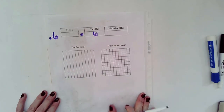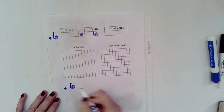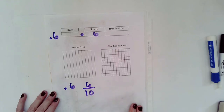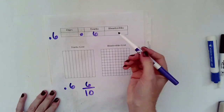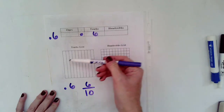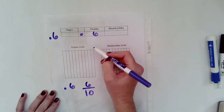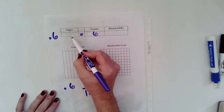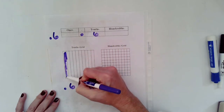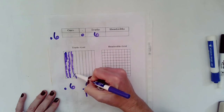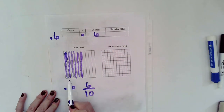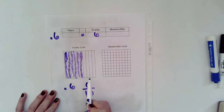When someone says 'six tenths,' they could be saying it in decimal form or in fraction form. Let's look at what six tenths would look like on a grid. If I fill up the entire grid, it would be one whole, but we don't have one whole because there's nothing in the ones place. I'm going to color in six tenths, and I can see that I've filled up a little bit more than half of the grid.